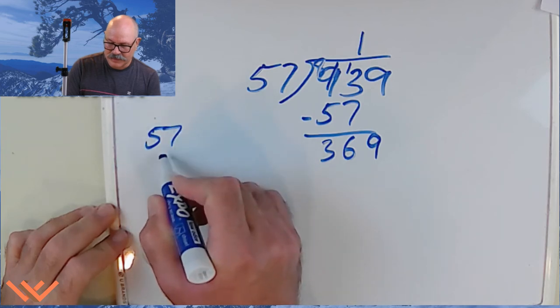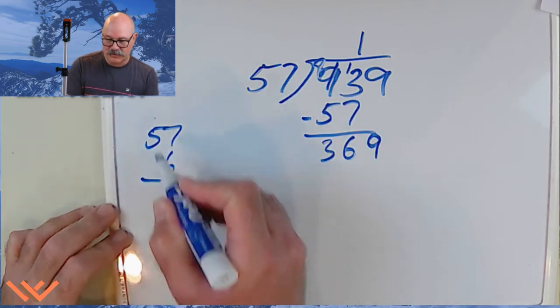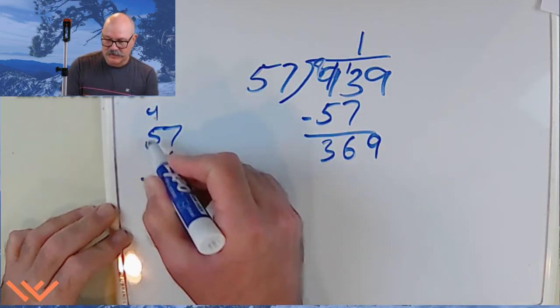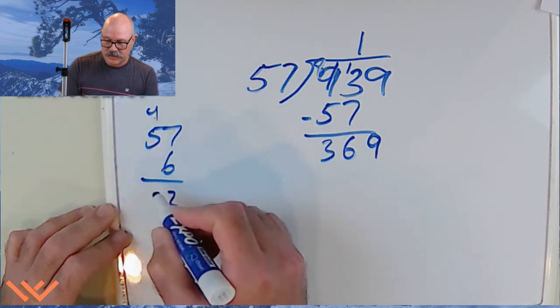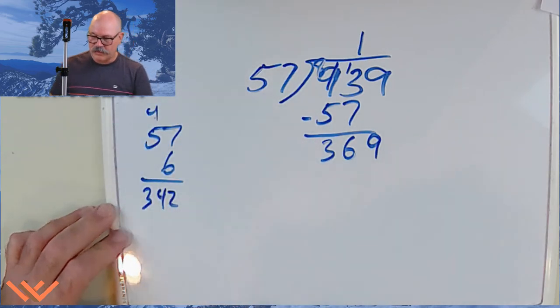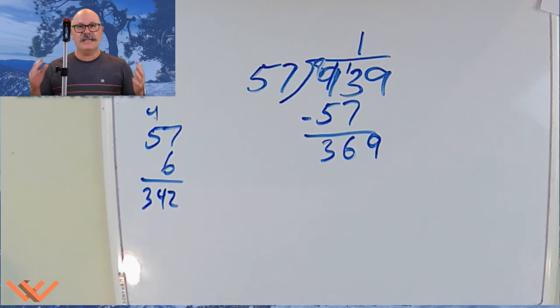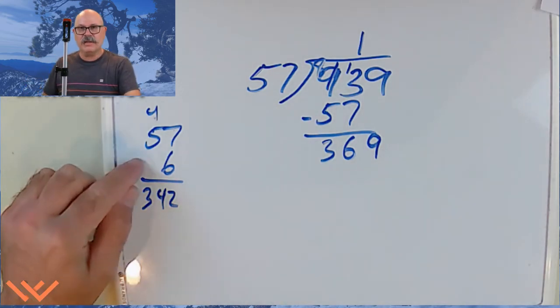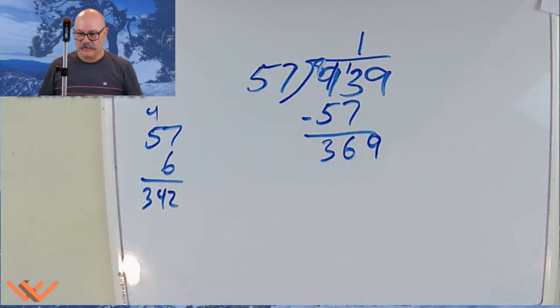So, 57 times 6. 6 times 7 is 42. 5 times 6 is 30. And 4. So, 342. That got me in the ballpark. See, I used rounding to get me in the ballpark. And then I multiplied it by what I thought might fit.